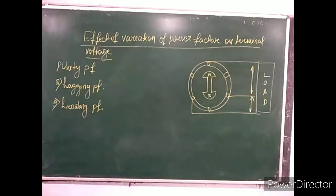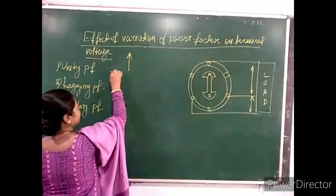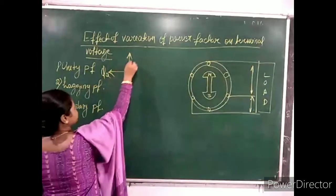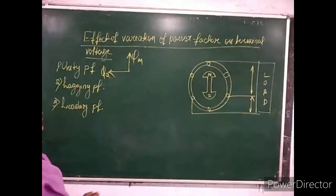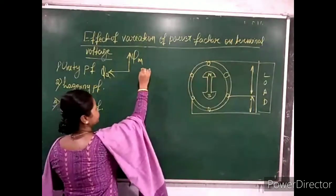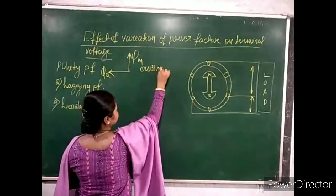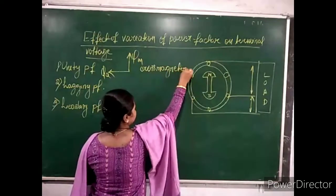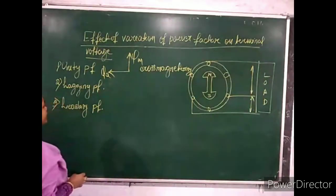On the discussion of armature reactions, the armature flux is in quadrature with the main flux, and the nature of this effect is called the cross-magnetizing effect of armature reaction on the main flux.